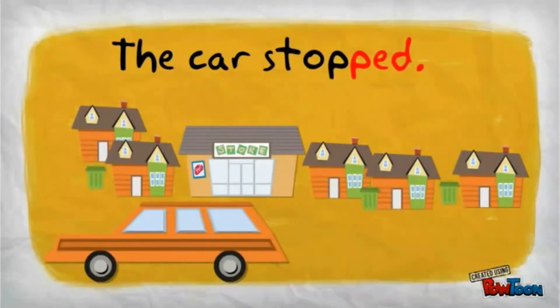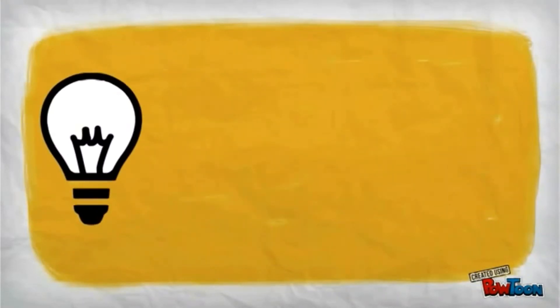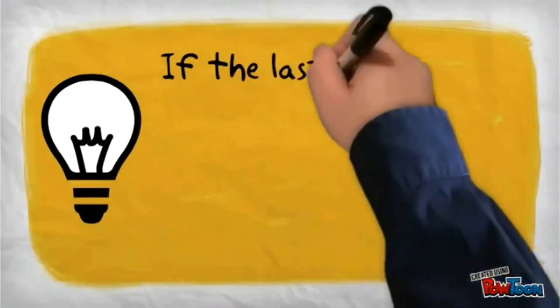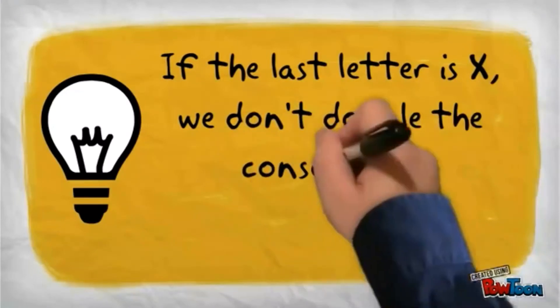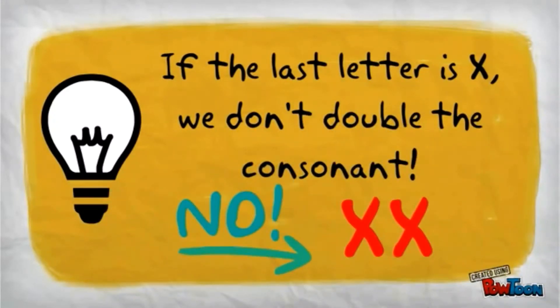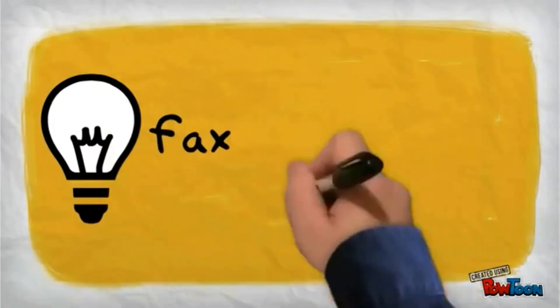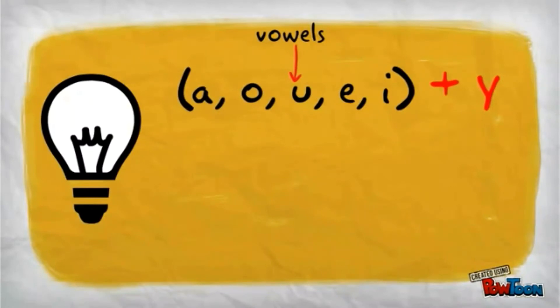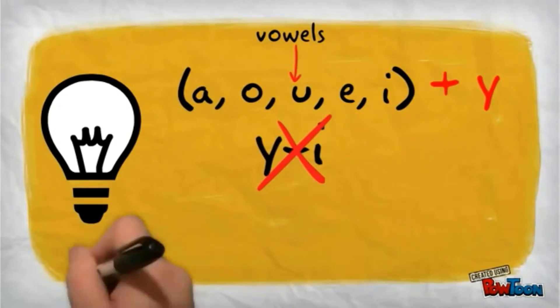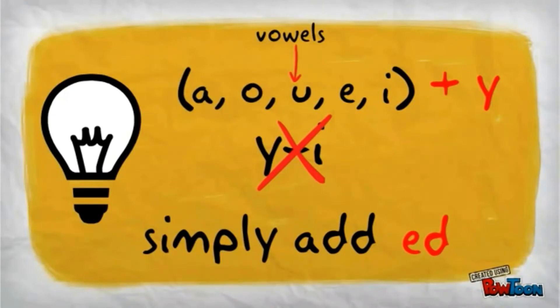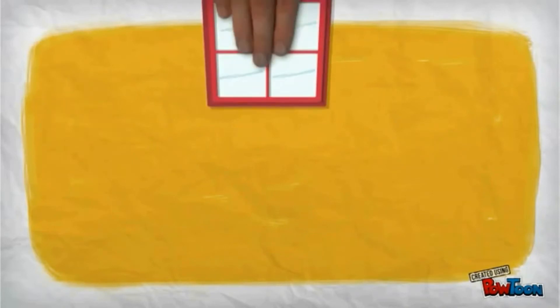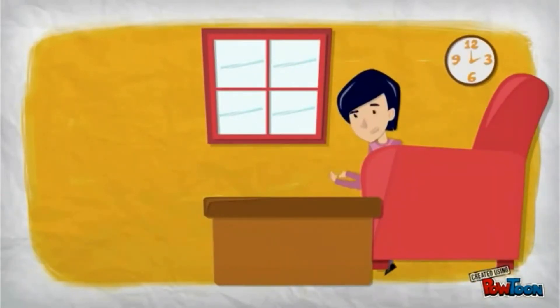Remember, when the verb ends in consonant plus vowel plus consonant, we double the last consonant and then add ED at the end. For example: stop, stopped. The car stopped. If the last letter is X, we don't double the consonant. For example: fax, faxed. When the verb ends in a vowel plus Y, Y does not turn into I. We simply add ED at the end. For example: stay, stayed. She stayed at home.